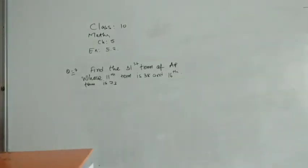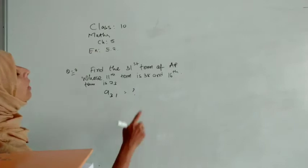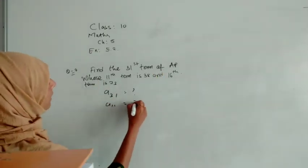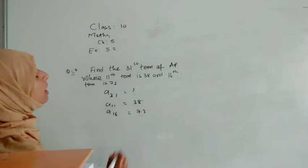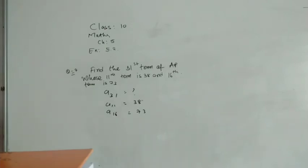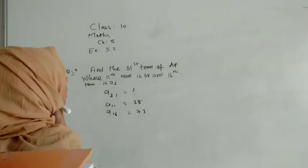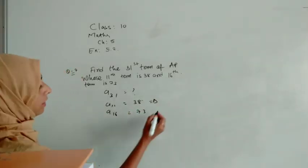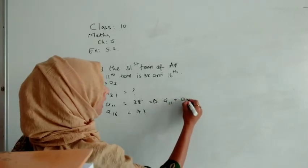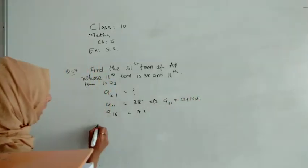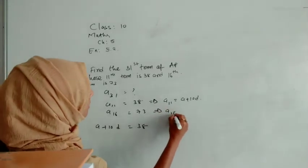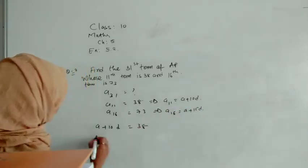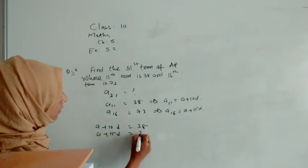Guys, as you know, let me write the question. Question number 7: Find the 31st term of AP. In it, we have to find a31, whose 11th term is given as 38 and whose 16th term, means A16, is given as 73. So very good logic. As here you can see, A11 we can write as a plus 10d. So a plus 10d's answer they have given as 38. And A16 we can write as a plus 15d. So here we can write a plus 15d, and that is equal to 73.